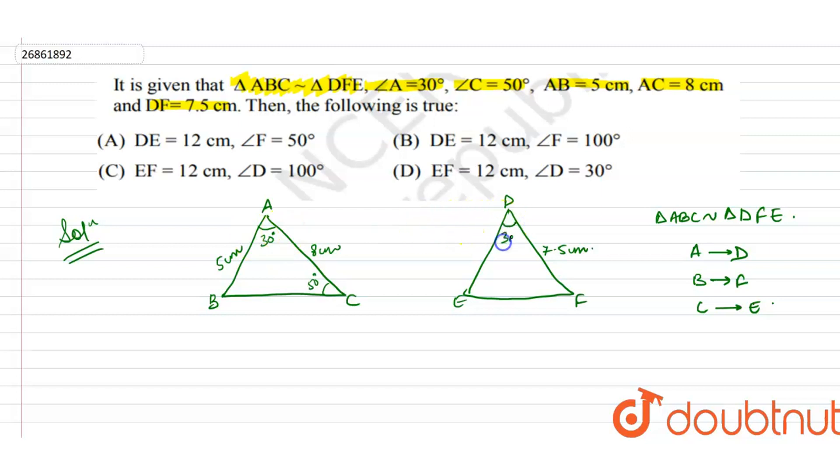So angle D will be 30 degrees, because of corresponding parts of similar triangles. Similarly, angle C is 50 degrees, so angle E is 50 degrees. The sum of angles equals 180, so angle F equals 180 minus 50 minus 30, which is 100 degrees.